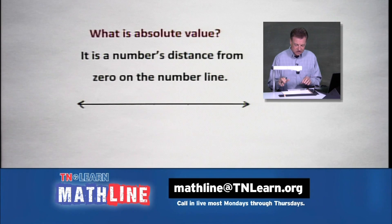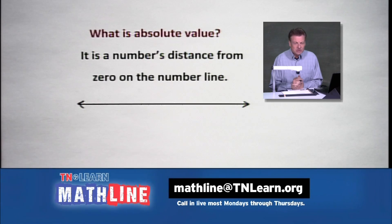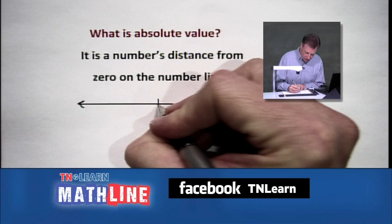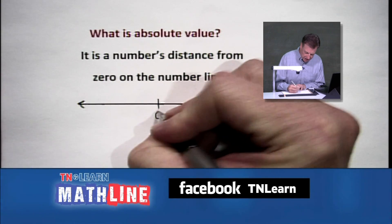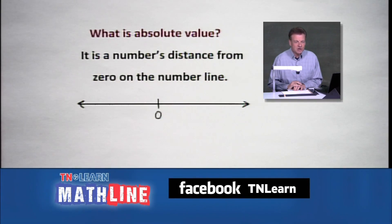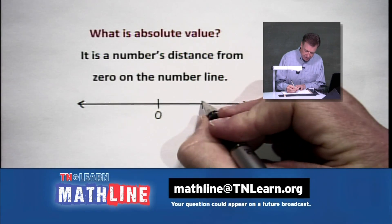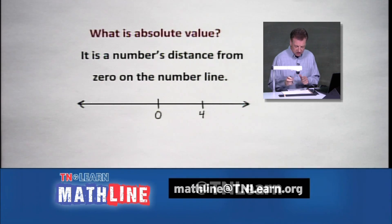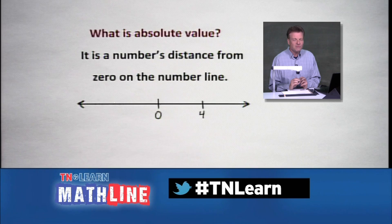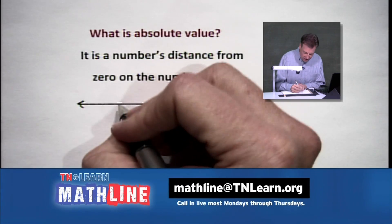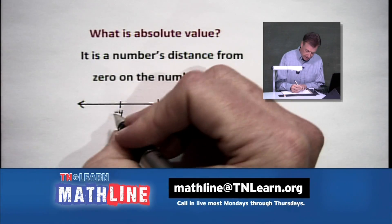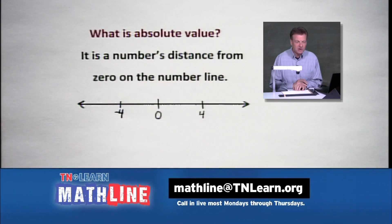What is absolute value? We hear that expression a lot. It's a number's distance from zero on the number line. I'm going to peg my little zero right here, basically in the center. And out here I'm going to peg positive four — four units away. You can imagine the intervals from zero to four. Over here to the left, we also have negative four.